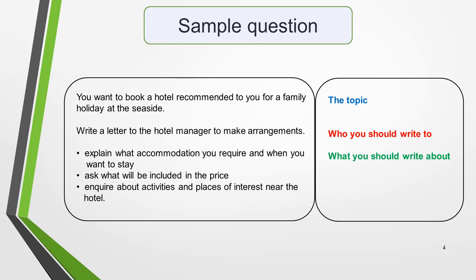You want to book a hotel recommended to you for a family holiday at the seaside. Write a letter to the hotel manager to make arrangements. Explain what accommodation you require and when you want to stay. Ask what would be included in the price. And ask what activities and places of interest are near the hotel. The first sentence gives the topic — that you want to book a hotel. The second sentence tells you who you should write the letter to, in this case the hotel manager. The three bullet points tell you what you should write about.